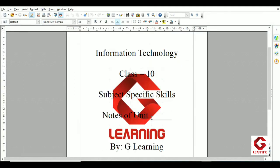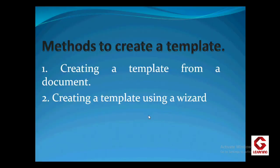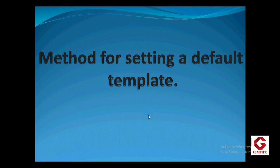Now you have seen both methods — creating a template from a document and using the wizard method. Next is the method for setting a default template. The need for this is: the template I created and saved as 'Notes Front Page' — whenever I open a new document in OpenOffice Writer, I get a blank document. But instead of a blank document, I want that template to appear. So I have to set the template as the default template.